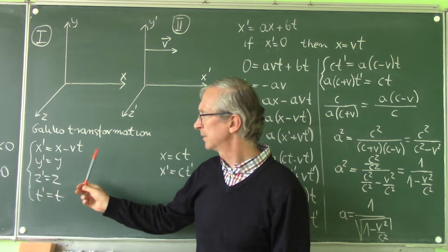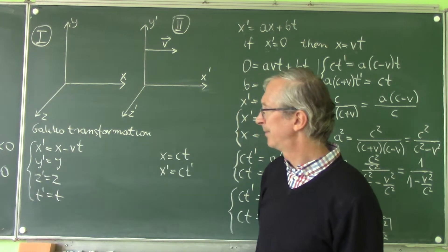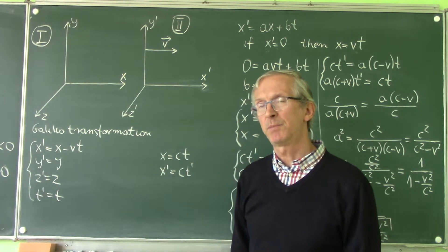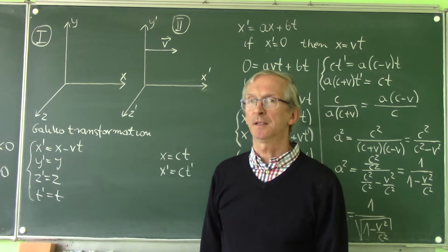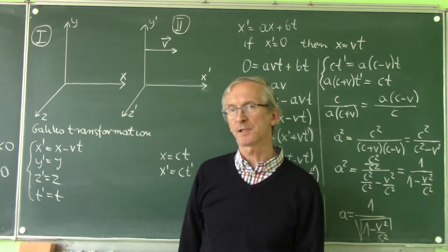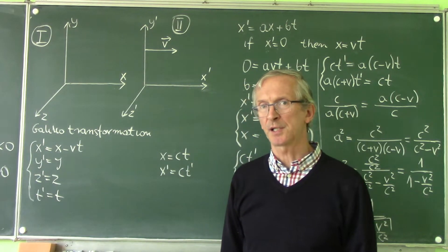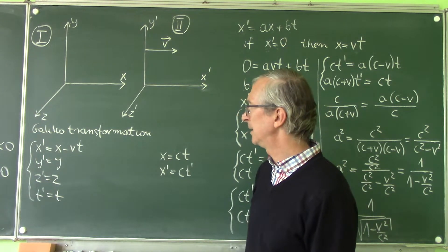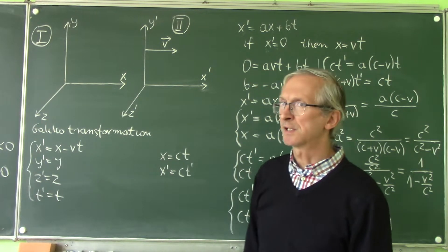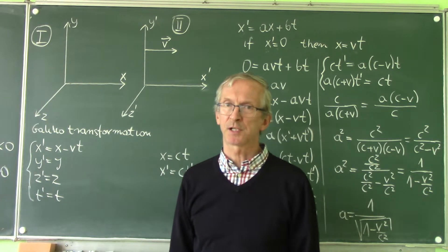I should remind you about the Galileo transformation. We know that this transformation is not true because it does not comply with the main postulates of the special theory of relativity — namely that the speed of light is the same in all inertial frames of reference, and that nothing can move faster than light. The Lorentz transformation complies with these main postulates.